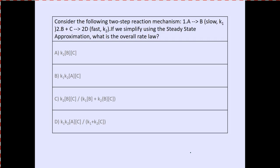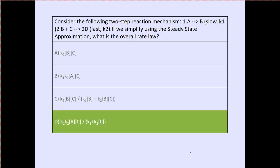Consider the following two-step mechanism: slow step A → B, and fast step B + C → 2D. Using the steady-state approximation, the overall rate law answer is D — because C is not showing up as a catalyst, C must be included. Notice C will eventually cancel out due to the 2KC term. However, you will not have to do steady-state approximations.